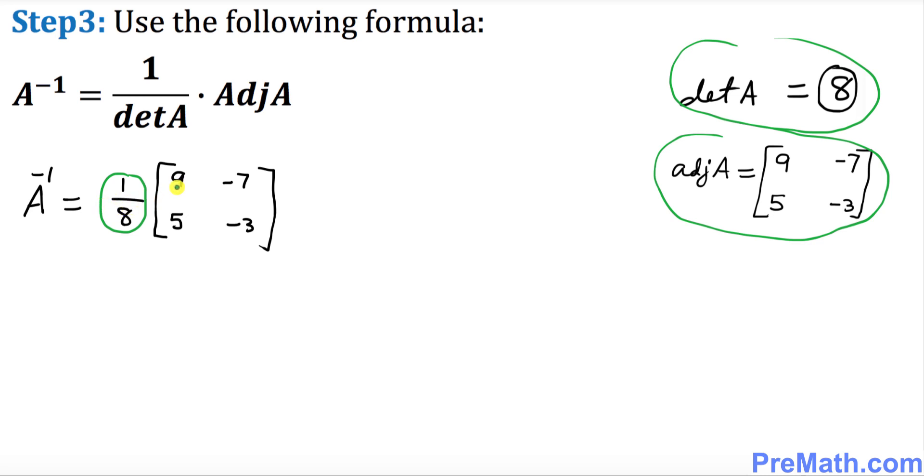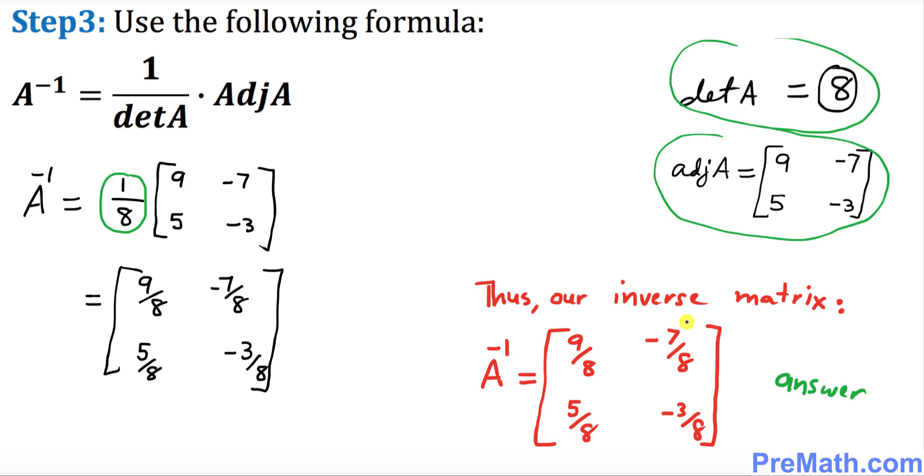So that's going to be our final step. That is going to simply become nine over eight, negative seven over eight, this is going to become simply five over eight, and this is going to be negative three over eight. Thus our inverse matrix A to the power negative one turns out to be this one.